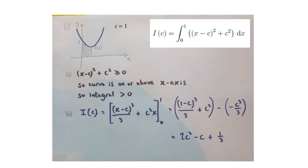For part 3, we explicitly find a formula for i(c). We integrate (x−c)² + c² from 0 to 1. You can use the rule that (x−c)² integrates to (x−c)³/3, or multiply out x² − 2xc + c² and integrate term by term, remembering c² is a constant so it integrates to c²x. Substituting limits and tidying up gives i(c) = 2c² − c + 1/3.